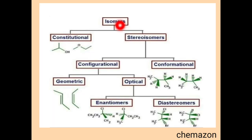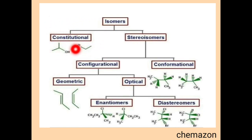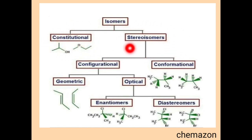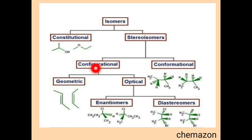Isomers are basically of two different types: constitutional isomers and stereoisomers. Constitutional isomers are two molecules having the same molecular formula but different constitution or different bond connectivity. Stereoisomers are those isomers which are actually the same but have a different arrangement in three-dimensional space. They are again of two types: configurations and conformations.